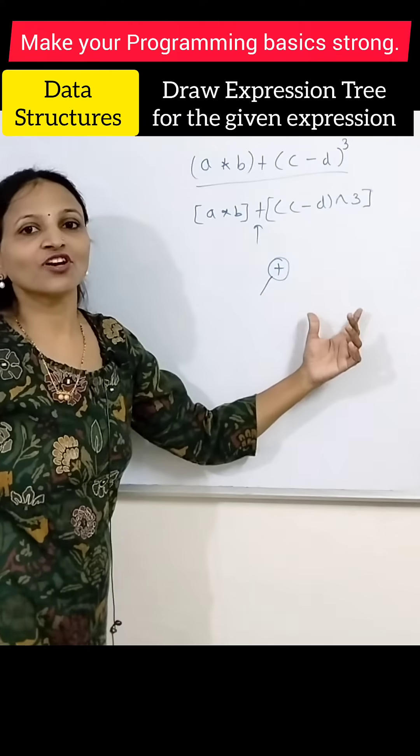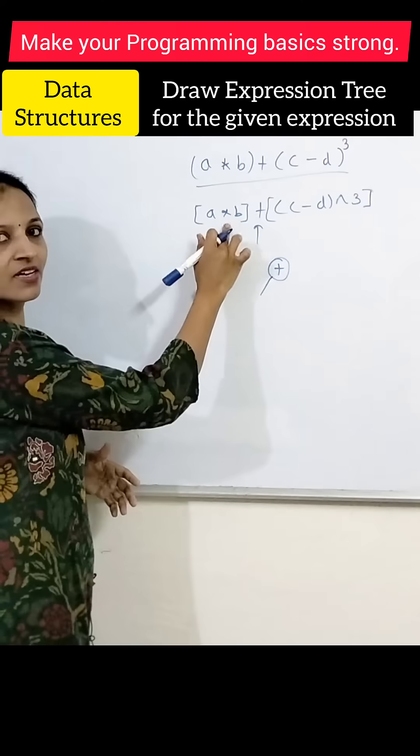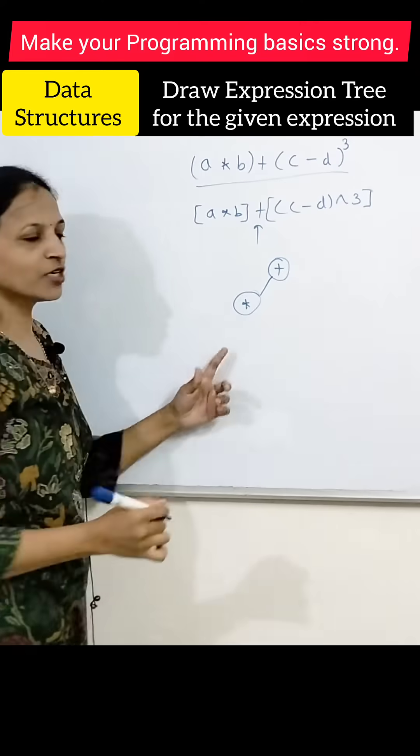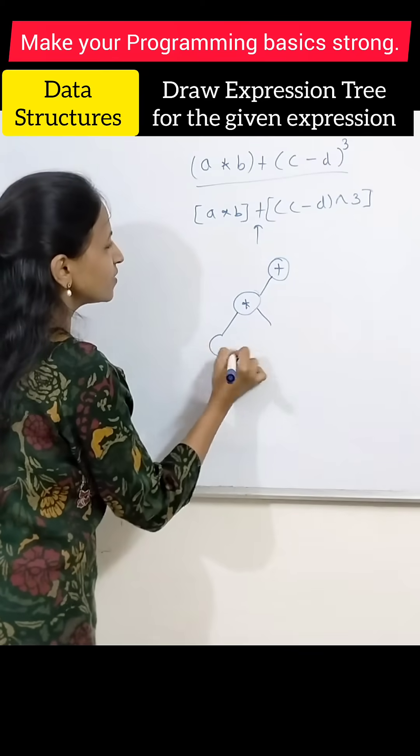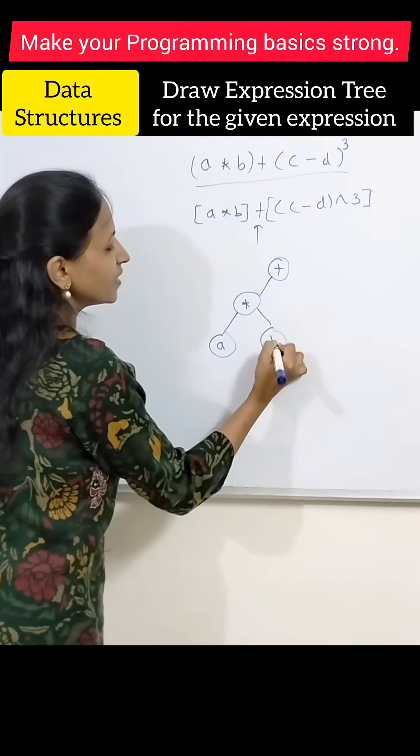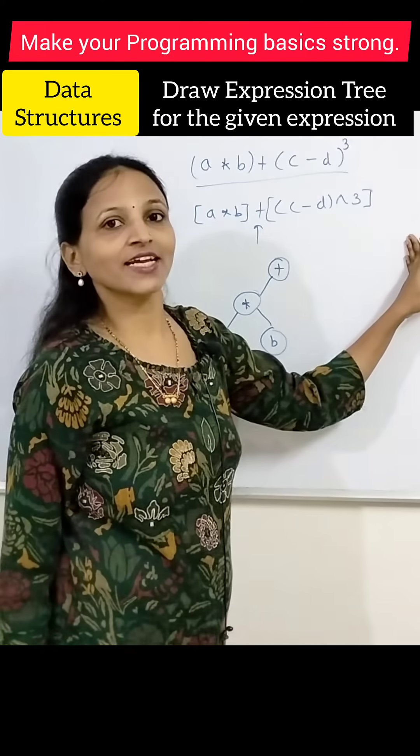To form this, put the multiplication symbol at the middle as a parent, and there are two children like a and b. Now for this right-hand side, we have to draw the tree again.